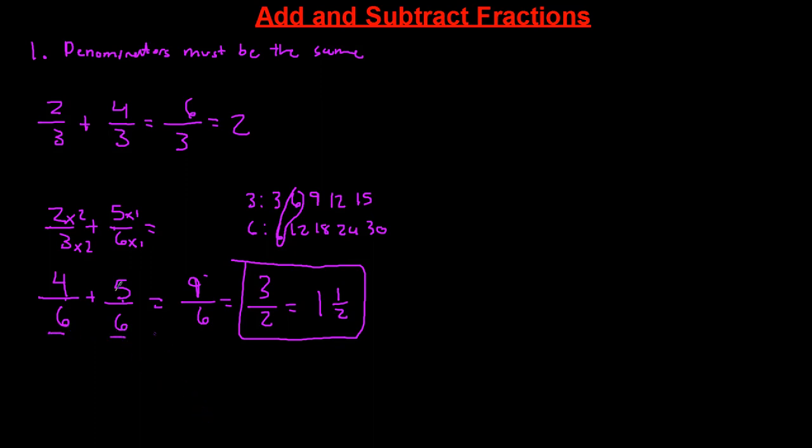Now let's try 3/4 plus 3/6. We have to make sure our denominators are the same, so let's find our least common multiple. So we have 4, 8, 12, 16, 20. I'm just gonna do 5. Next we have 6, 12, 18, 24, and 30. What number matches? The 12s. So our least common multiple is going to be 12.